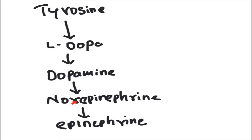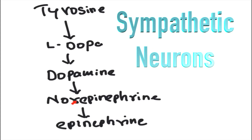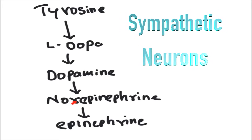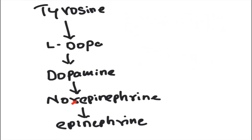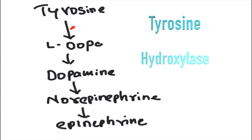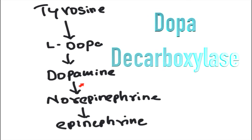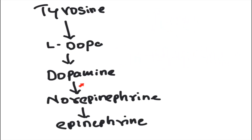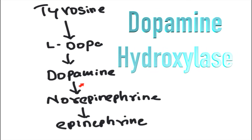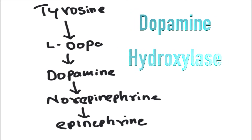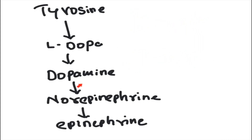In sympathetic neurons where the neurotransmitter is norepinephrine, all sympathetic neurons express three enzymes to convert tyrosine into norepinephrine: tyrosine hydroxylase enzyme, DOPA decarboxylase enzyme, and dopamine beta-hydroxylase (also called dopamine beta-oxidase) enzyme.